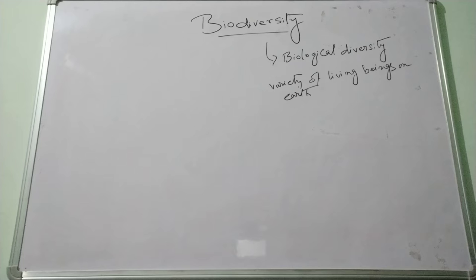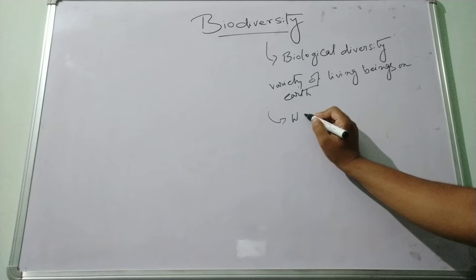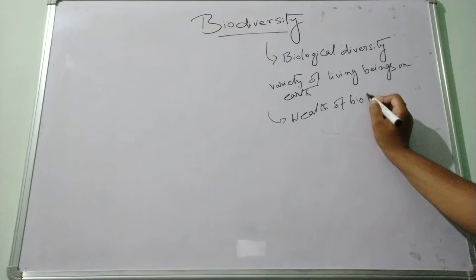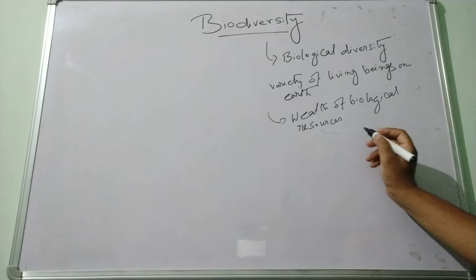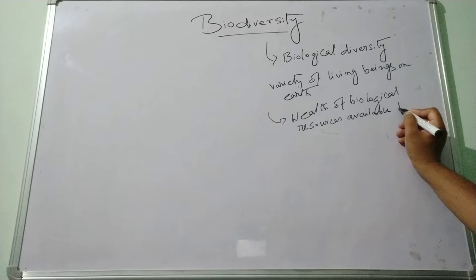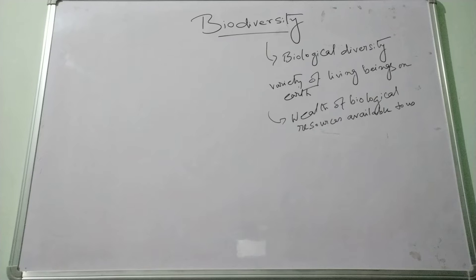Biological diversity encompasses the different types of microorganisms, plants, animals, and ecosystems such as forests, deserts, coral reefs, etc. It represents the wealth of biological resources available to us. Biodiversity is the foundation of ecosystem services to which human well-being is intimately linked.